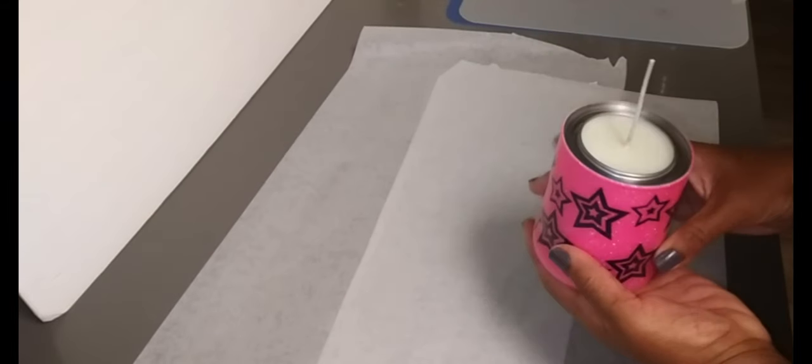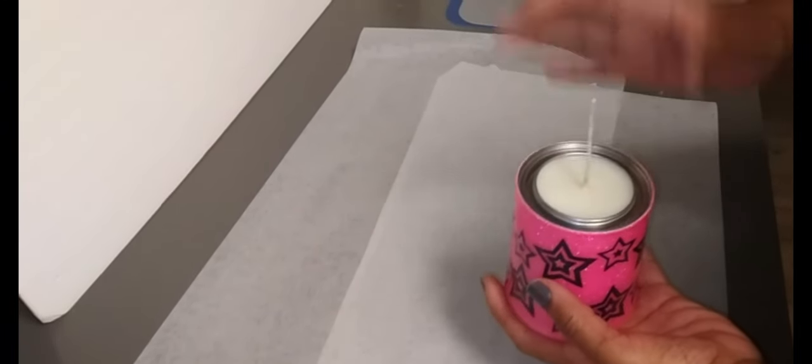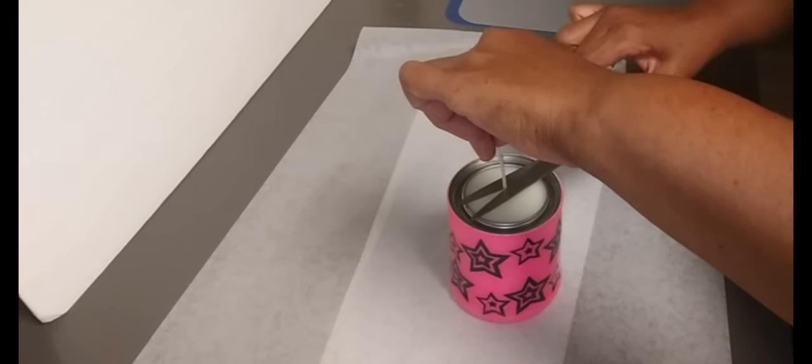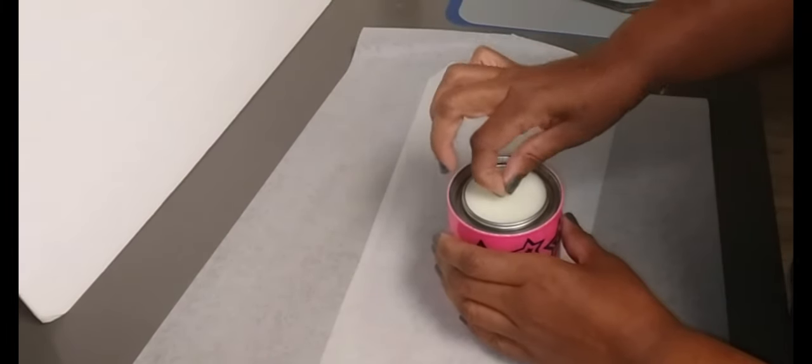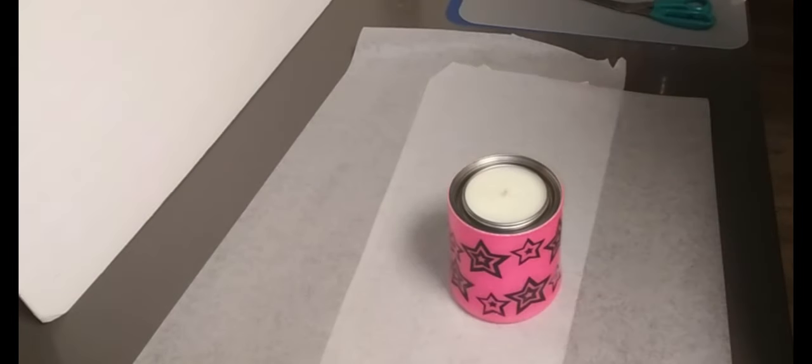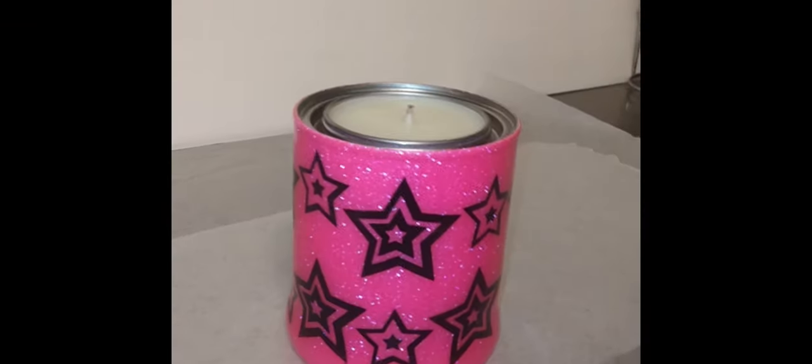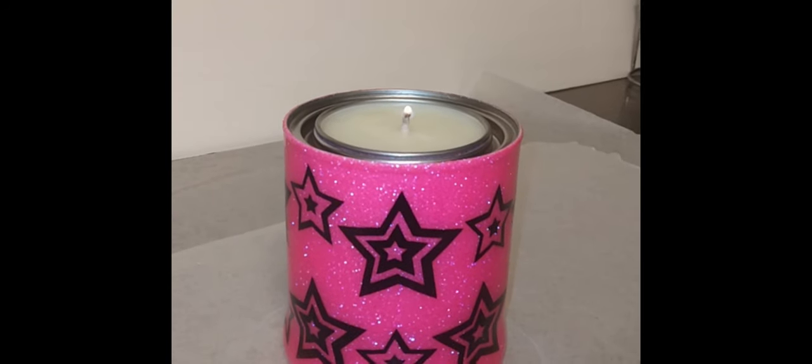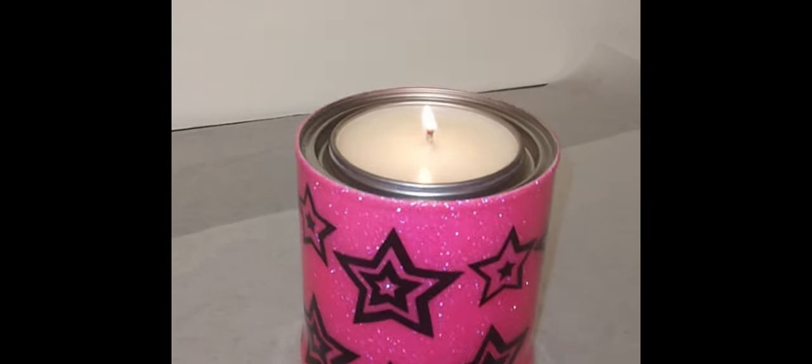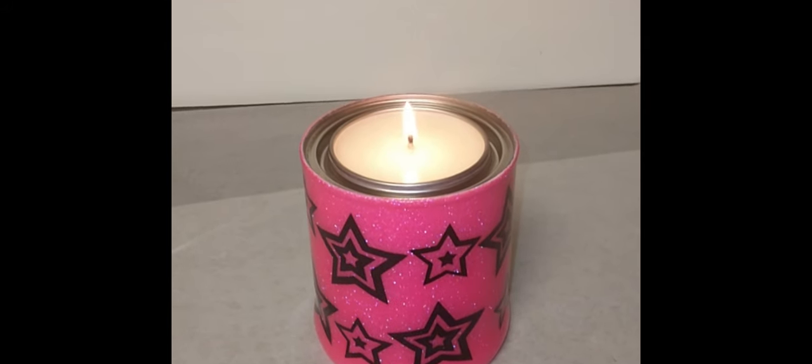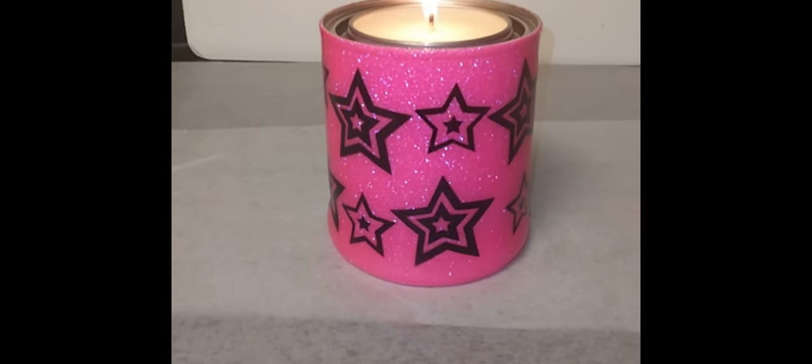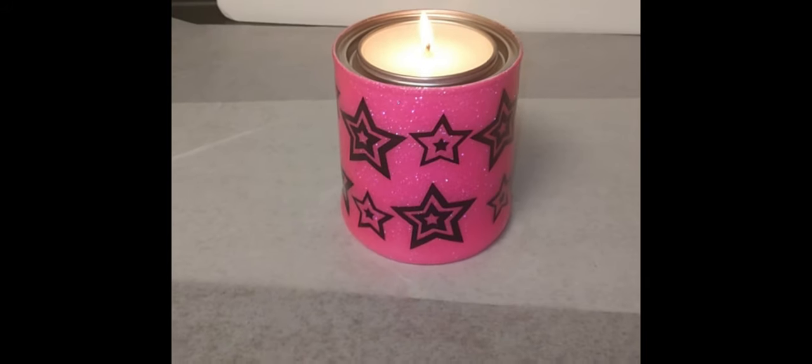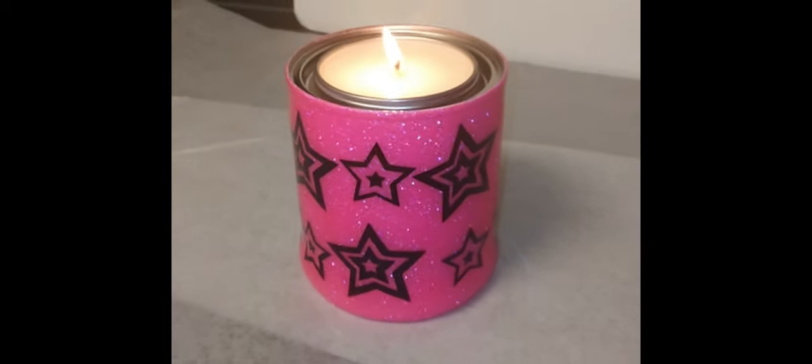So here's the finished candle. And we use Moroccan cashmere as the fragrance oil. So I'm going to click this down to about there. And then we're going to light it so we can see what it looks like.